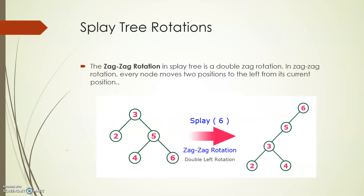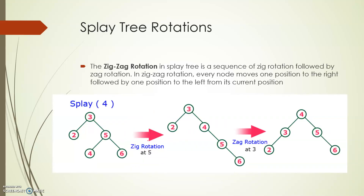The zag-zag rotation involves two left movements. For example, if root node 6 needs to become the root, it first moves to the position of 5, then moves to the position of node 3. When 6 moves to the root, 5 becomes a child of 6, and node 3 along with 2 and 4 move to form the left subtree under 5.